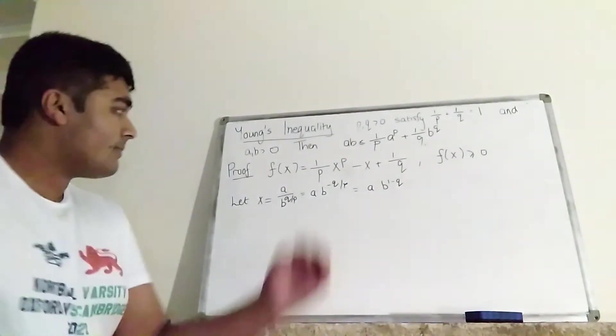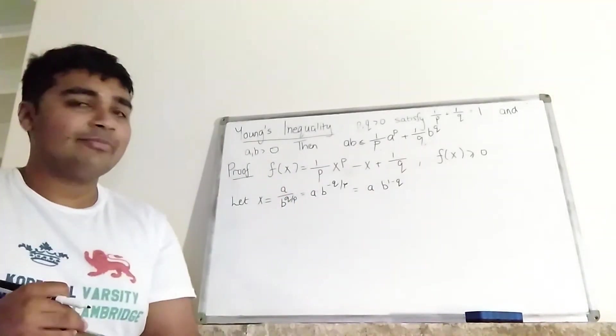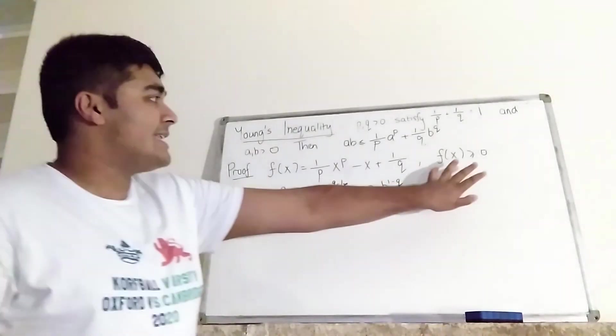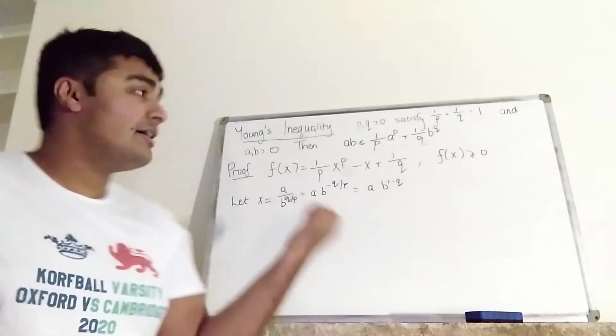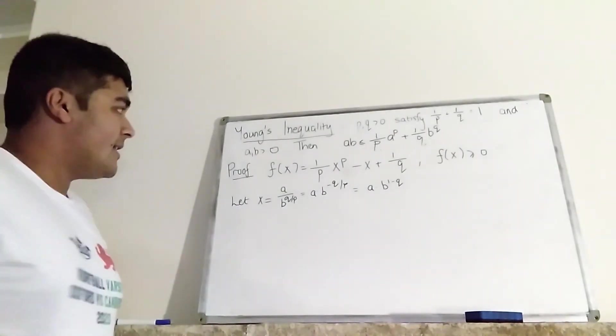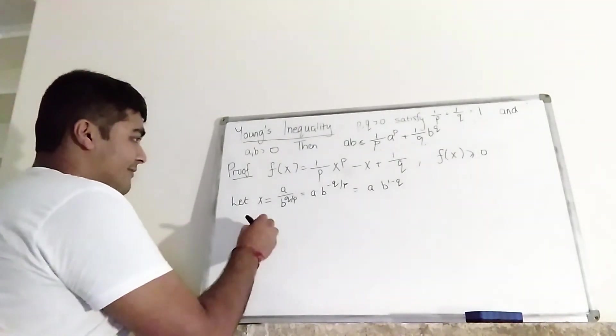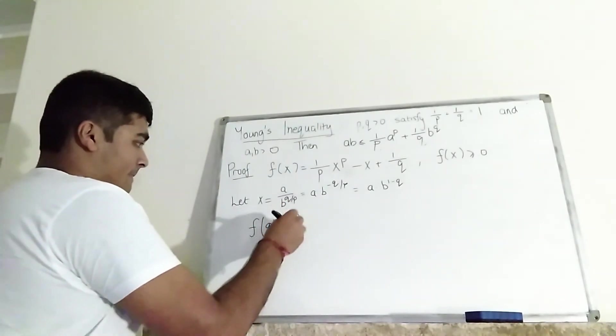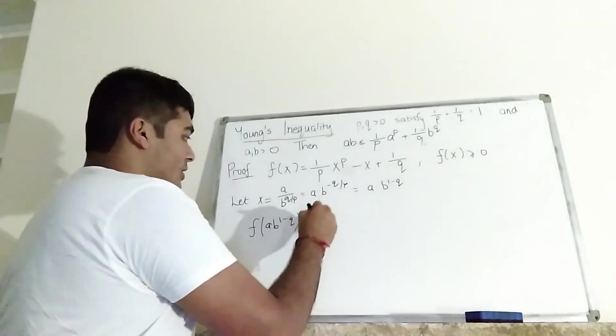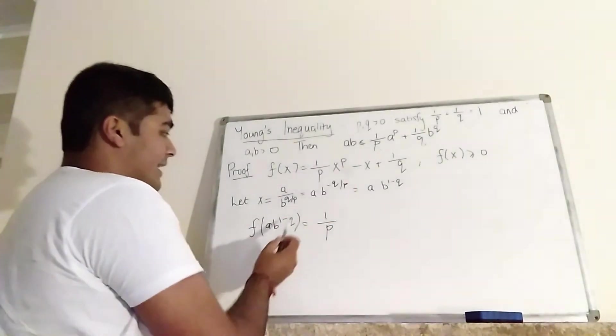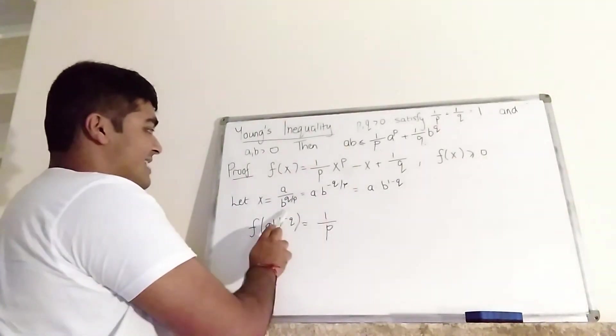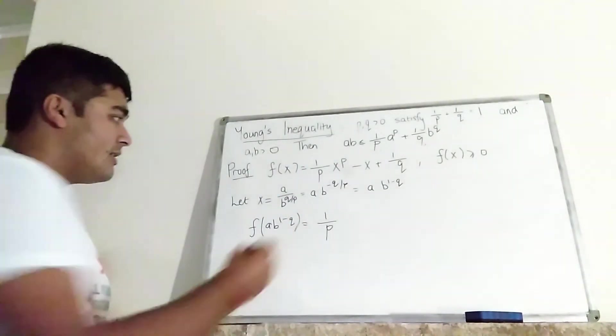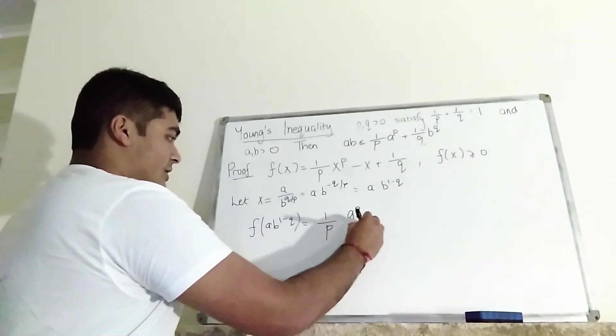OK, now we want to plug this thing in here. Perhaps fiddle about, do some multiplying and stuff. But essentially using the inequality we just derived. And hopefully we should end up with Young's inequality. OK, so let's plug this in. So we get F of this thing here. That's going to equal 1 over P. Now remember, we're plugging this thing here, but this thing here is the same as this thing here. So X to the P is this thing here to the P. So that's just A to the P divided by B to the Q. Because on the denominator, the P's will cancel.